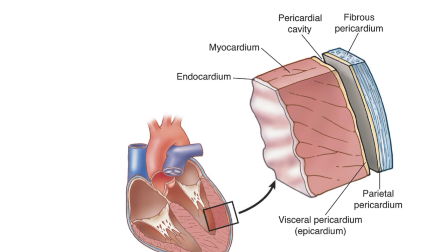The parietal pericardium forms a strong protective sac for the heart. It also helps to anchor the heart within the mediastinum.